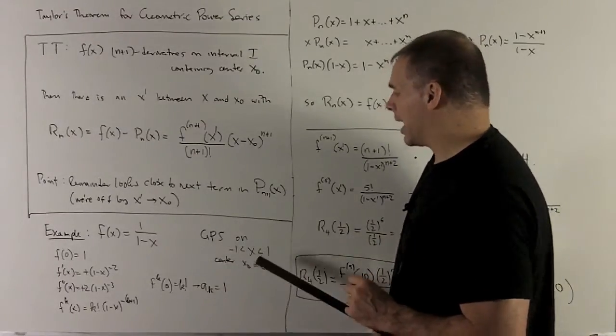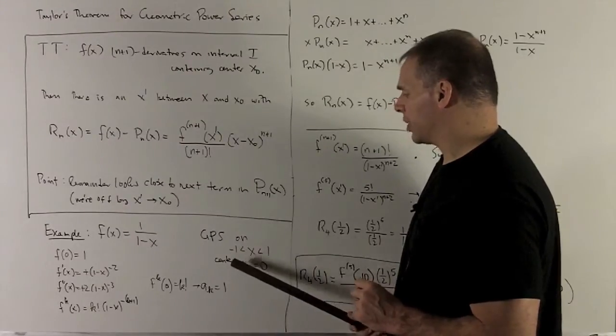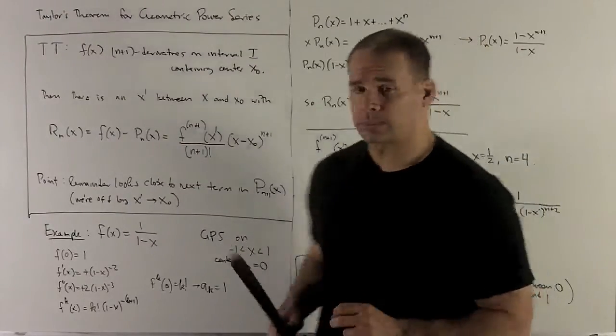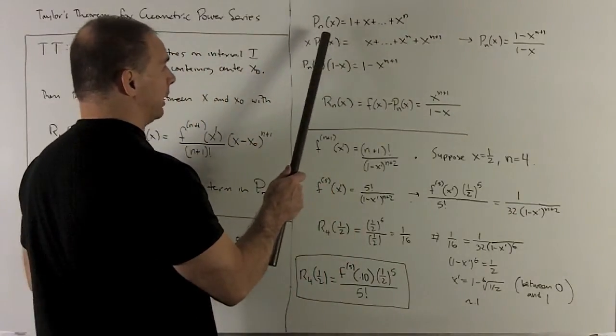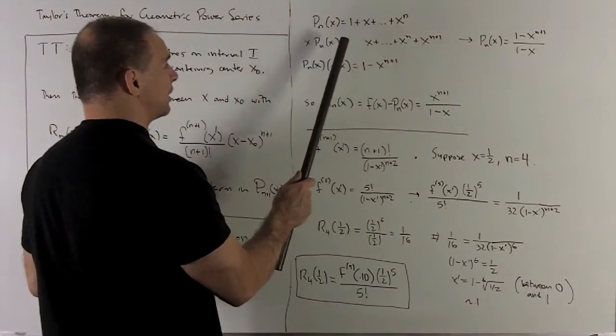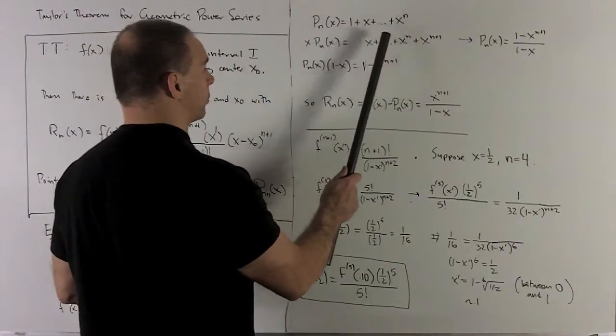So from that, I can get my geometric power series centered at 0. Our Taylor polynomial is just going to be p sub n of x equal to 1 plus x all the way up through x to the n.